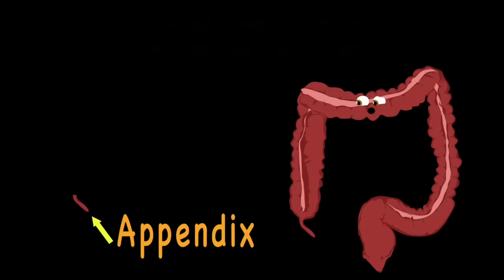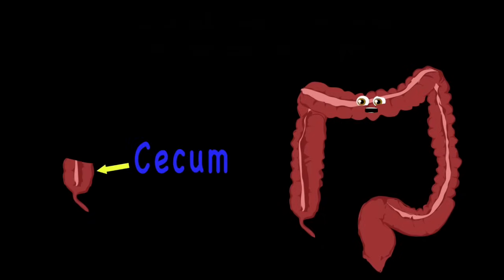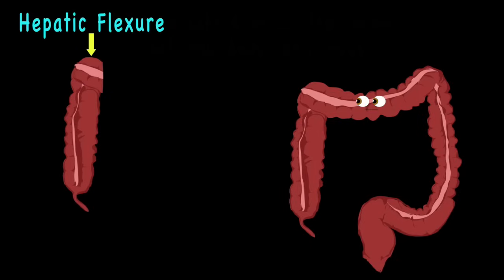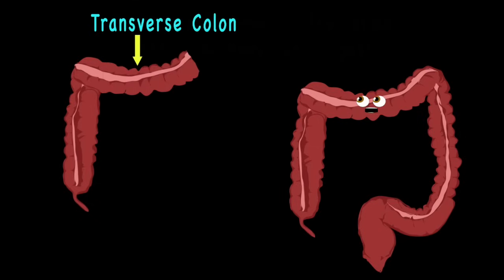Attached to your cecum. The next part of my tubular shape is the ascending colon, which leads to the hepatic flexure. So you're learning in this song — your transverse colon runs across your entire abdomen.